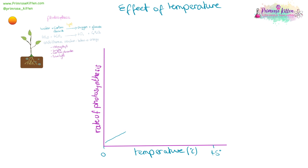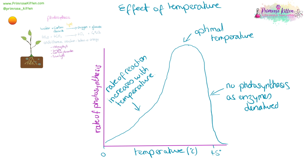When plants are very, very cold, everything acts very slowly and not a lot happens. The rate slowly increases until a nice optimal point where the enzymes are happy and there's lots of photosynthesis going on, until it gets too hot and the enzymes start to be denatured and the rate falls off very rapidly. It's really important to remember that the enzymes are denatured — not killed. They are denatured.